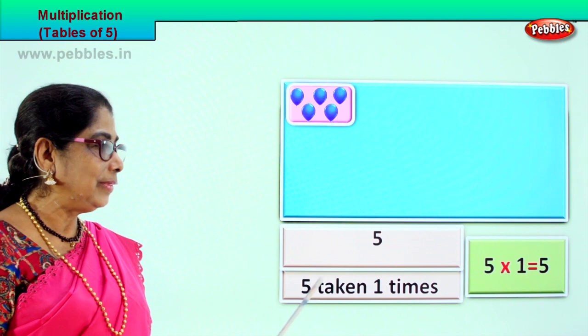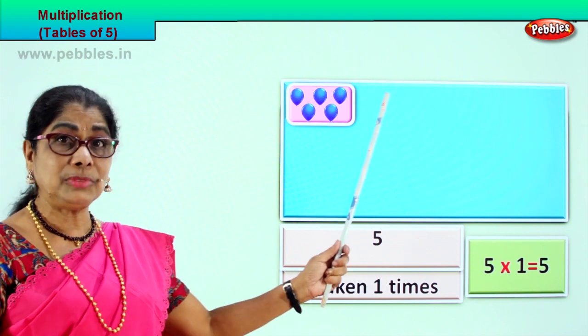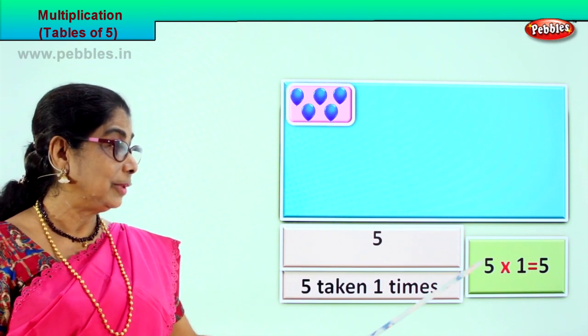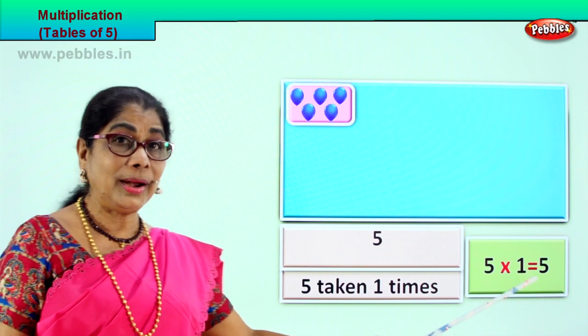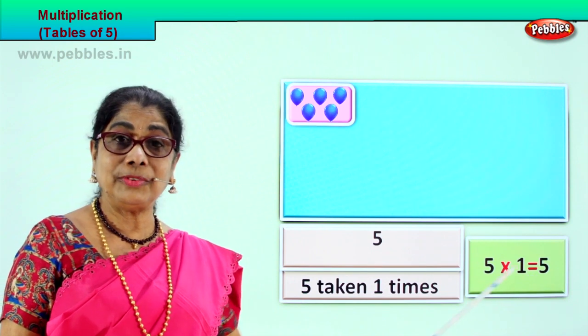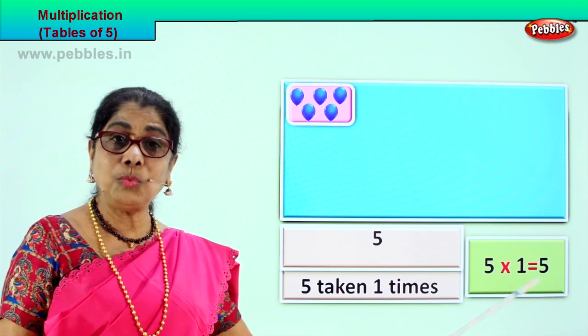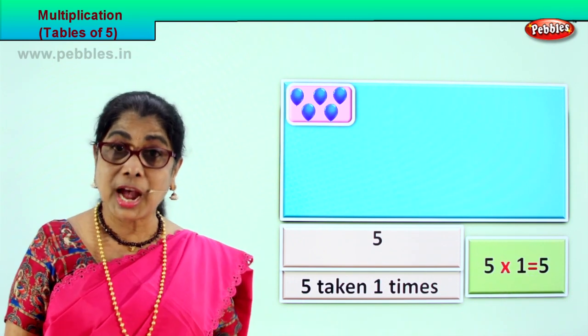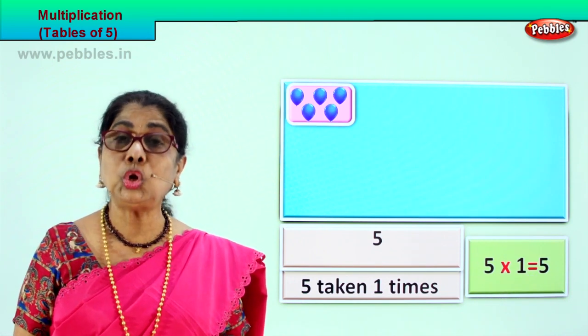One group of five. Five taken how many times? One time. Five into one is five. Five ones are five. Good.